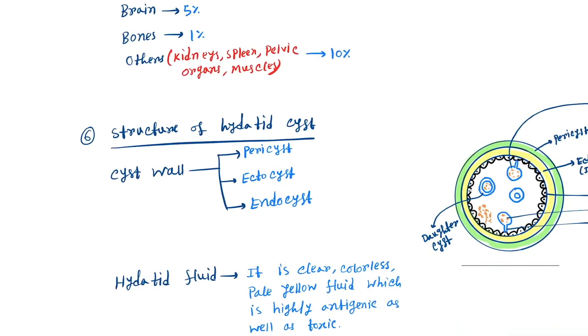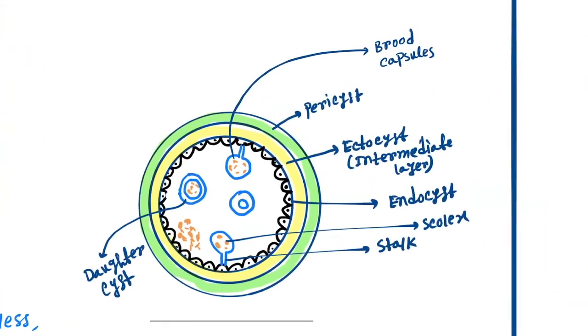Next is structure of the hydatid cyst. Here you can see that the first is cyst wall. Cyst wall contains three layers: pericyst, ectocyst, and endocyst. This is a schematic diagram. You can see this is the pericyst, ectocyst is the intermediate layer, and this is the endocyst.